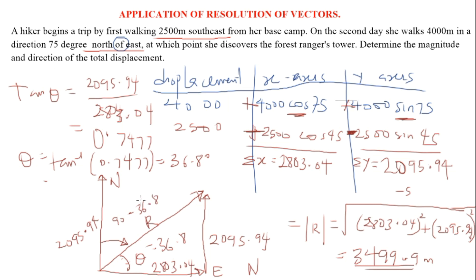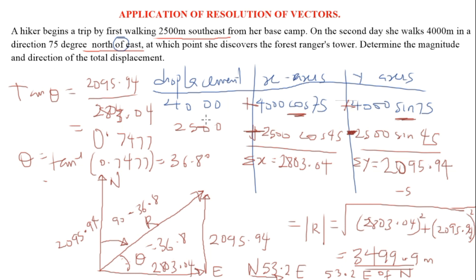So the direction of the resultant displacement is North 53.2° East — meaning the hiker traveled 53.2 degrees from the north toward the east. You can also write this as 53.2 degrees east of north, since it is coming from the north and going toward the east. Thanks for watching, and please share this video with your friends.